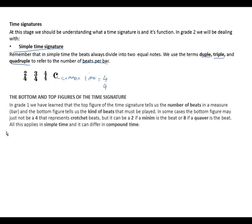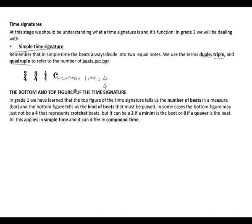The bottom and the top figures of the time signature: remember that the top figure of the time signature tells us the number of beats, and the bottom figure tells us the kind of beats we should find in the bar. It can be crotchets, minims, or semibreves.